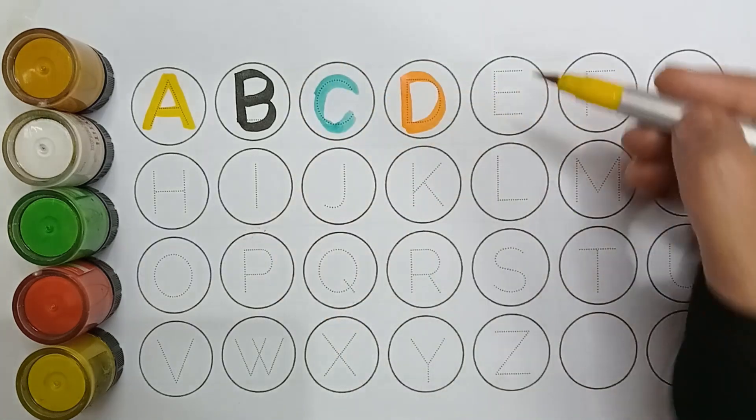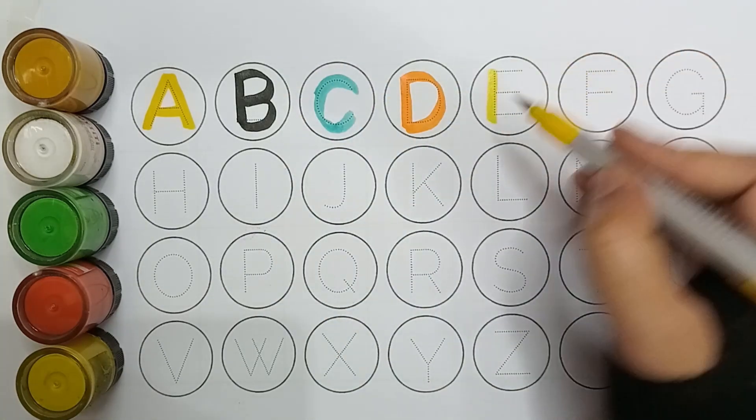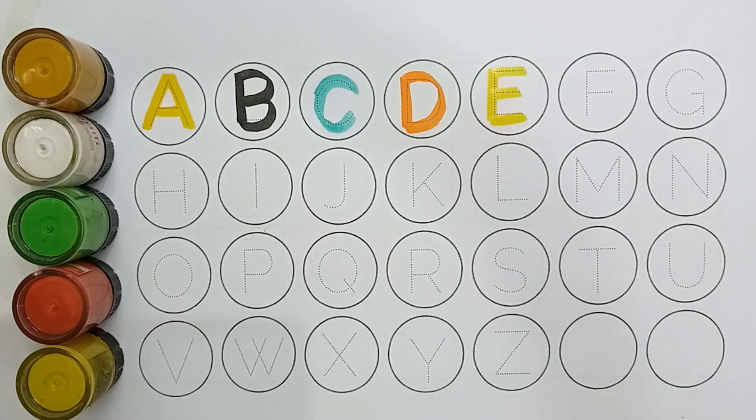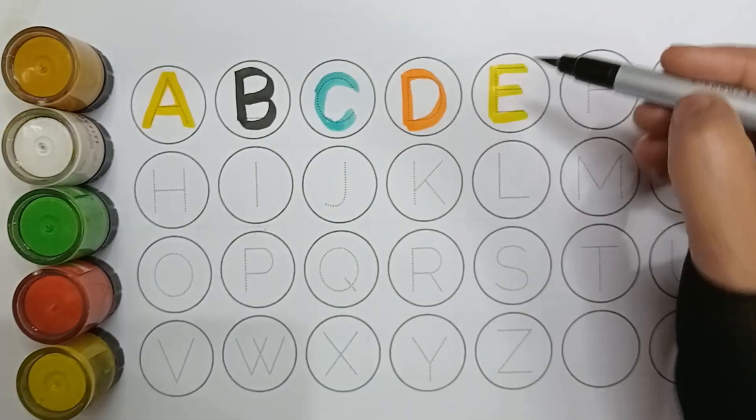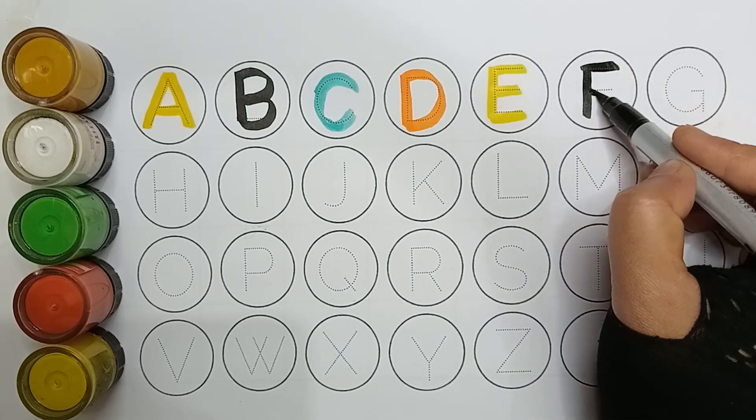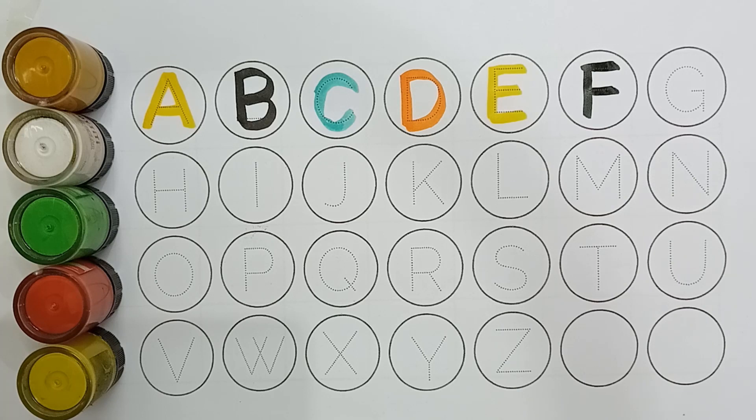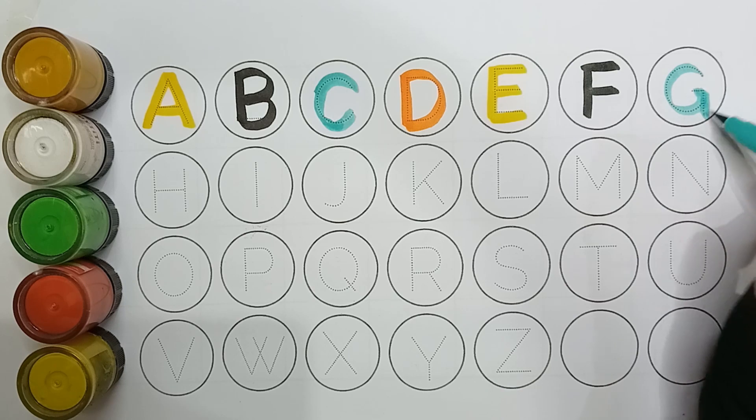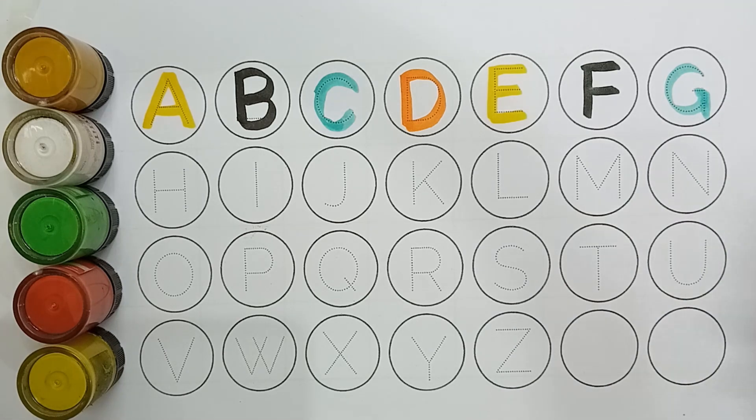Yellow color, E, E for egg. Black color, F, F for fish. Green color, G, G for grapes.